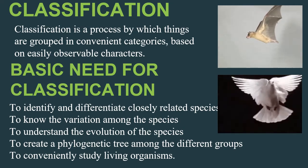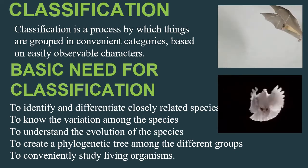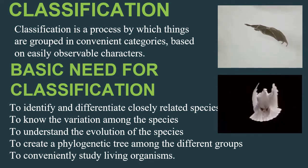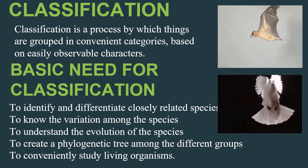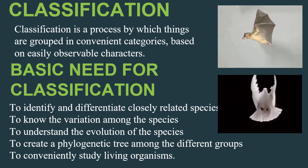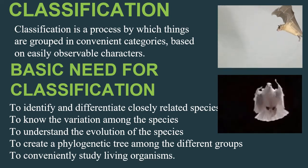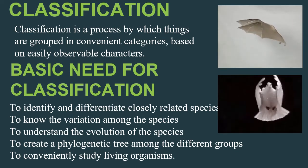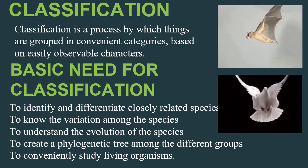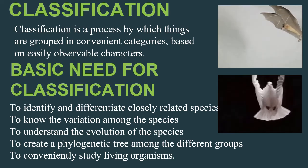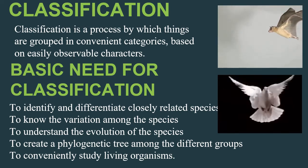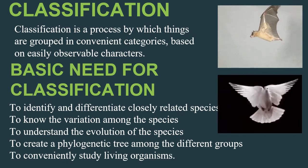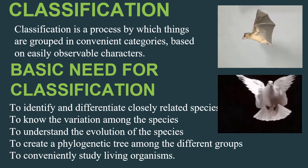Classification helps to create a phylogenetic tree among different groups. According to genetic arrangement, we can classify organisms, and due to classification, we can study many living organisms conveniently. So children, in this video I have completed these topics. Go through them, and if you have any doubts ask me during the live class. Thank you, children.